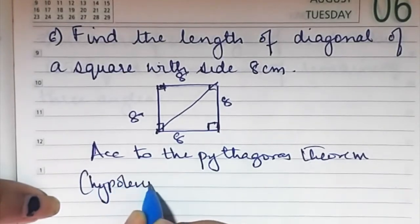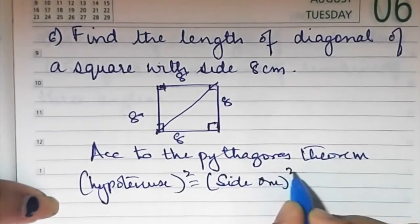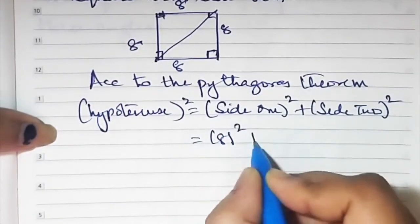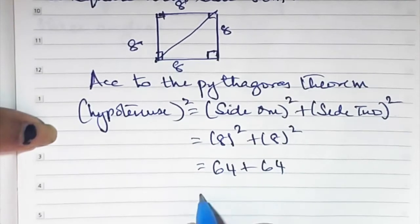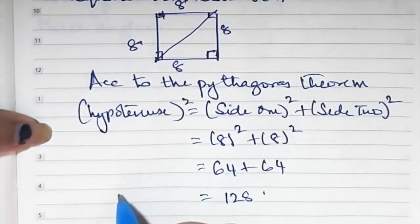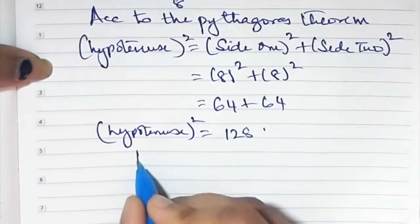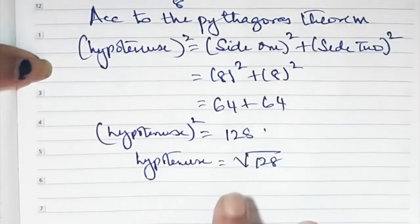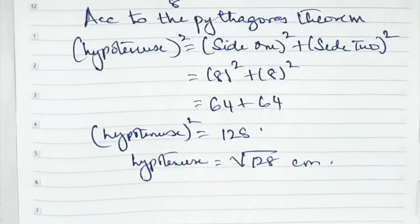Hypotenuse² = 8² + 8² = 64 + 64 = 128. So the hypotenuse is √128. Since 128 is not a perfect square, the diagonal is √128 cm. That's sum number 6.